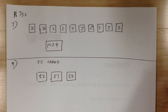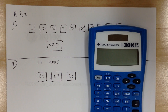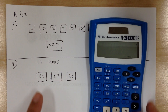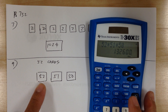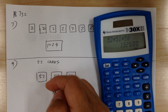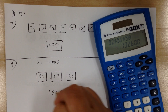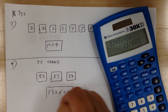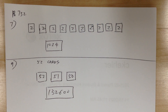So when you multiply: 52 times 51 times 50, you get 132,600. And that's it.